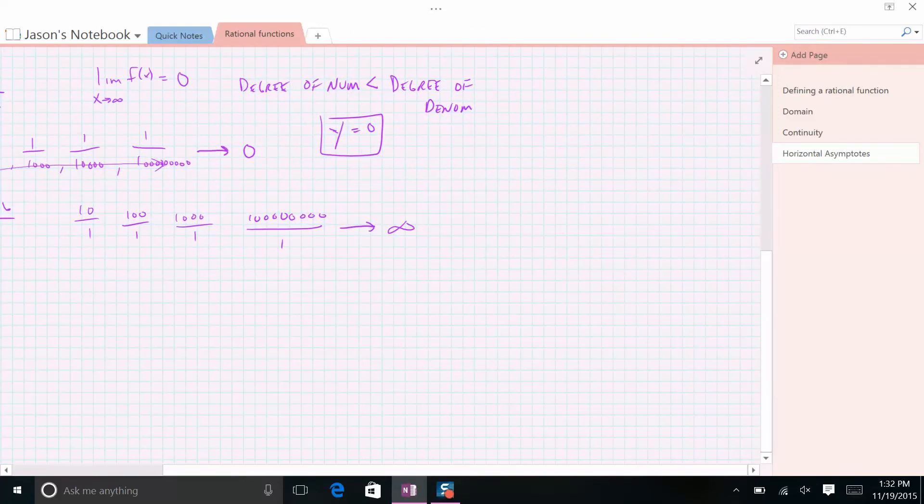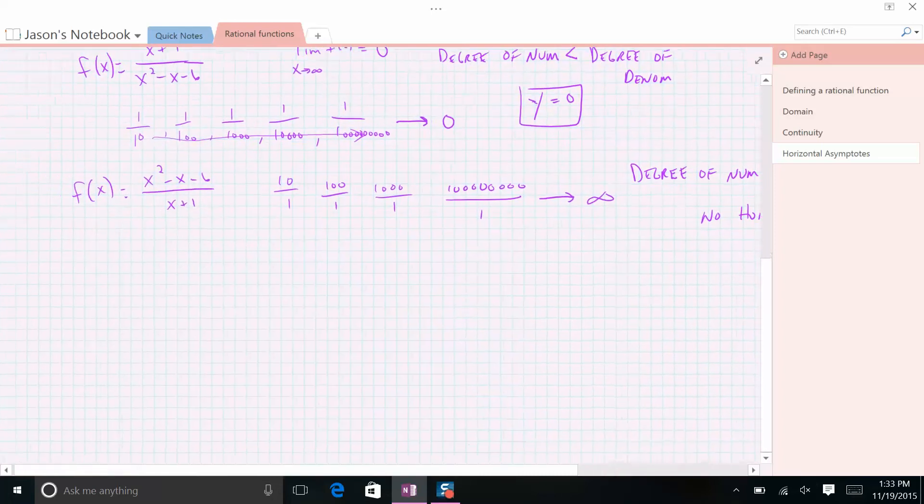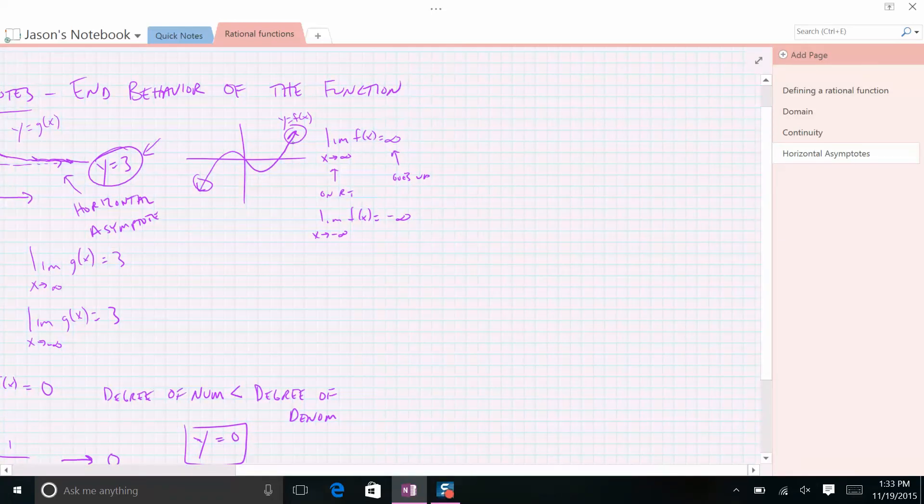So this means when the degree of the numerator is larger than the degree of the denominator, you have no horizontal asymptote. Okay? Because it's like one of these, there's no asymptote in this graph. It just goes up forever or down forever.